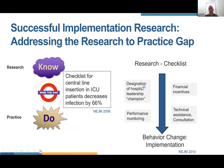Through many studies, what they found was that in order to move their research — the checklist — into behavior change, they had to address several barriers and facilitators. They did this by designating hospital leadership champions, offering financial incentives to follow the checklist, offering technical assistance and consultation so people understood the checklists, and by performance monitoring. All of these things led to behavior change and demonstrated that if you take this implementation science approach, you can affect meaningful behavior change.